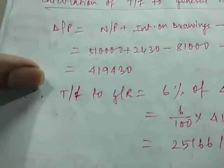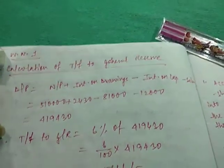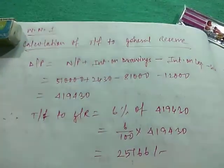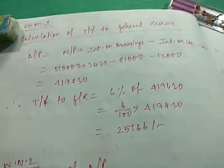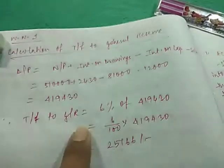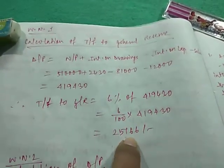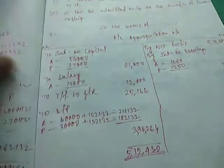So we got 419,430. So this is the divisible profit. This divisible profit will calculate 6% of this divisible profit to get the transfer for general reserve. So 6% of this divisible profit will give us 25,166. So this is the transfer to general reserve that we have written here, 25,166.